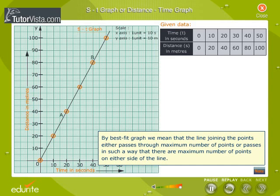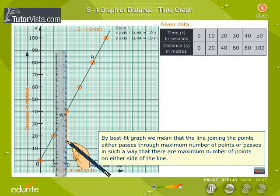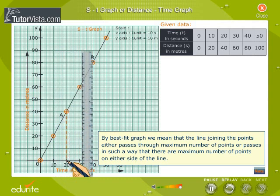Consider any two points A, B on the straight-line graph. Draw perpendiculars from A and B to x and y-axis and construct a right-angled triangle ABC.